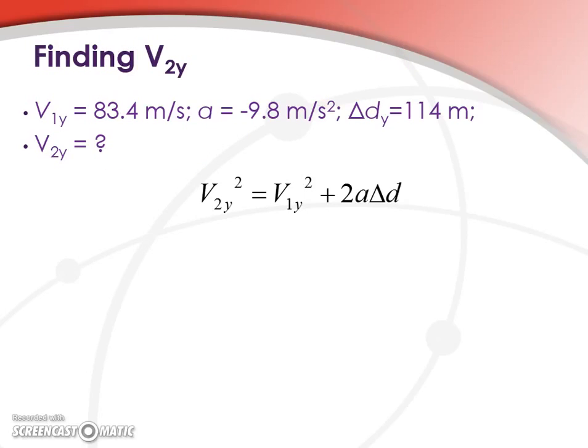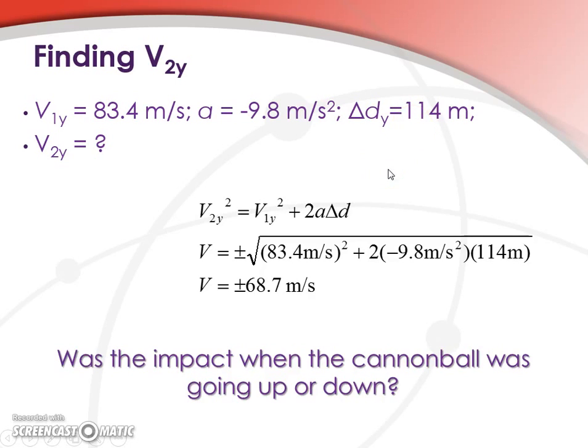Now using that we could if we wanted to calculate hang time, but in this case we're not looking for time. We're looking for the velocity with which it'll reach the point 114 meters up. So we can use V2y squared equals V1y squared plus 2a delta d as an expression. From there it's a fairly trivial problem to substitute in and get our velocity from the expression.